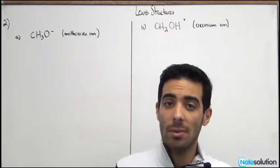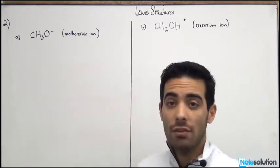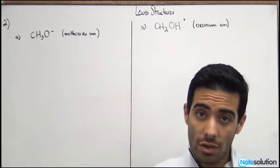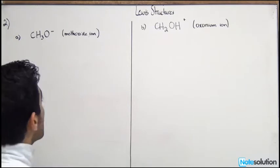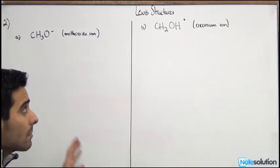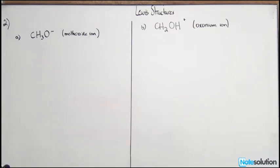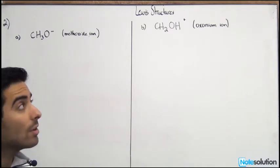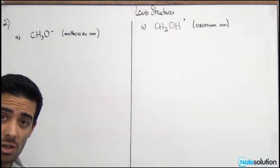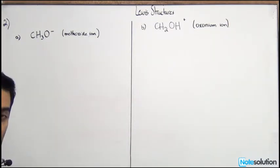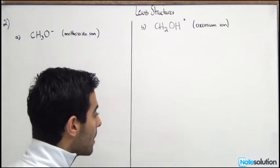In our second question about Lewis structures, we're going to go through a series of questions that ask us to find the formal charges of certain molecules. You'll also have to know the Lewis structure. Let's start with methoxide ion — this is a straightforward question as long as you have the periodic table and know how to calculate formal charges. Let's write the formal charge equation first.